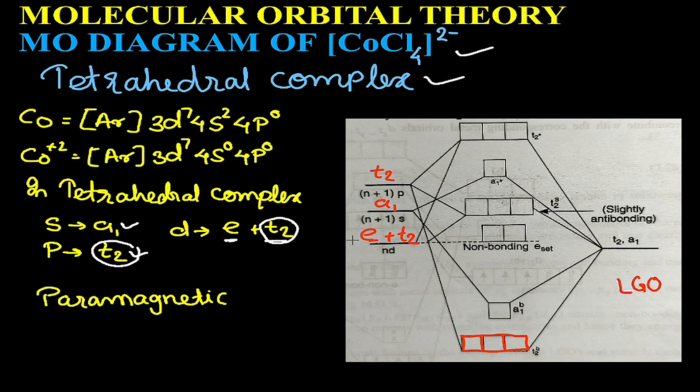In tetrahedral complex, S that is A1 will mix with A1 and it will give a bonding A1 and anti-bonding A1, while there are three T2 orbitals: T2P,